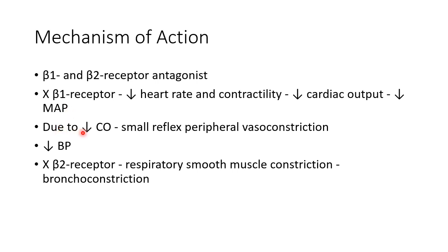Due to the decrease in cardiac output, there will be a small reflex peripheral vasoconstriction, but this is negligible, so the net result is a decrease in blood pressure. By blocking the beta 2 receptor, propranolol causes respiratory smooth muscle constriction, leading to bronchoconstriction.